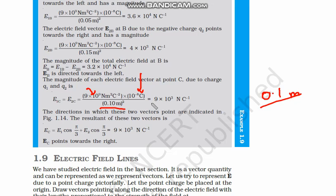So when we calculate this, this comes out as 9 into 10 to power 3 Newton per coulomb. This is the result of this calculation. Please do this calculation. This is quite easy. 9, 10 to power 9 minus 8. This comes out as 10 upon 0.1 square. That means 10 upon 0.01 which is 1000 or 10 to power 3 and 9 was always there. So it is 9 into 10 to power 3 Newton per coulomb. Please do this calculation. It will be very helpful to you.